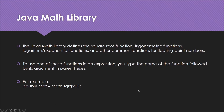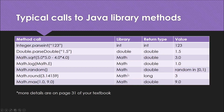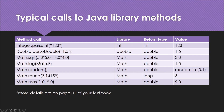Here are some typical calls for Java library methods. For example, if you write Integer.parseInt, the library will expect a string value and return an integer — so passing the string "123" returns the integer 123. Similarly, using the Double library, you pass a double value like 1.5 and get back 1.5.